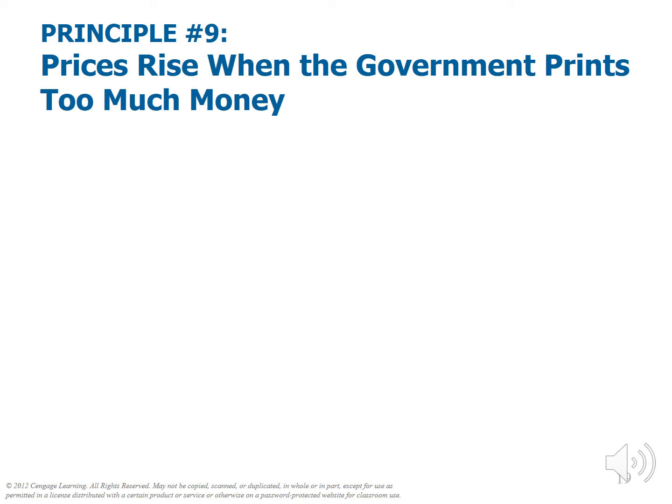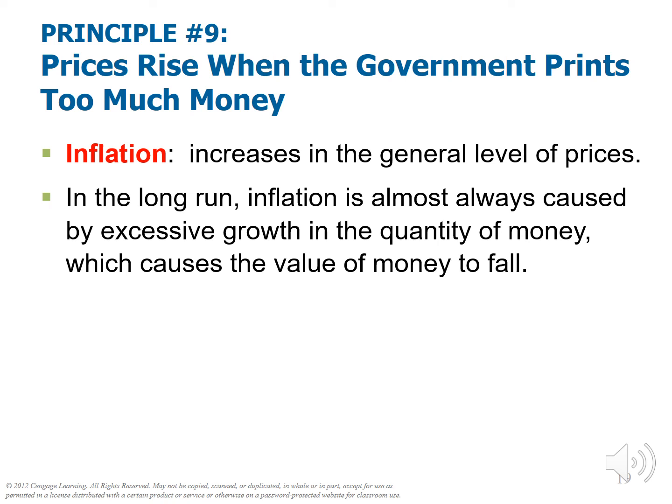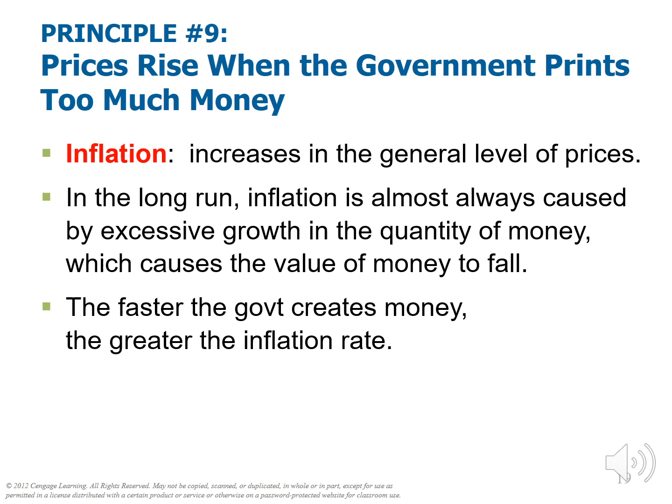Principle number nine: prices rise when governments print too much money. Inflation is an increase in the general level of prices. You might see the cost of rent go up, while milk and health care go down — we're thinking about the average level of prices overall. In the long run, inflation is almost always caused by excessive growth in the quantity of money. Growth in the quantity of money means the dollar buys fewer and fewer goods and services. Inflation causes the value of money to fall. The faster a government creates money, the greater the inflation rate, and there's a strong connection between monetary growth and the rate of price increases.